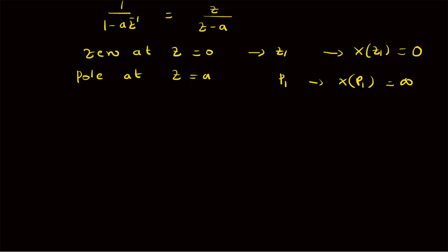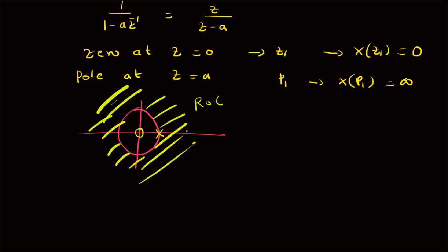These can be represented on the Z plane as follows. The zero is represented by a circle at the origin, and the pole is represented by a cross at location z equals a on the real axis. The Z plane shows the real part and imaginary part of z. So the zero is at the origin as a circle and the pole is at z equals a as a cross. Thanks for watching.